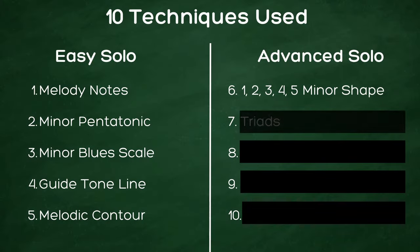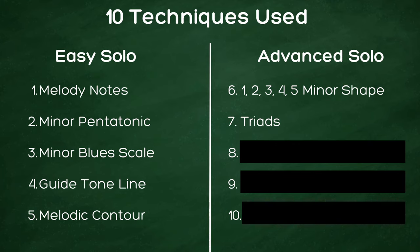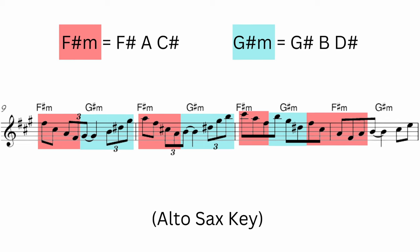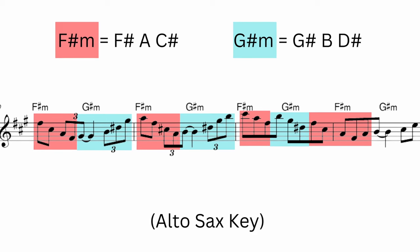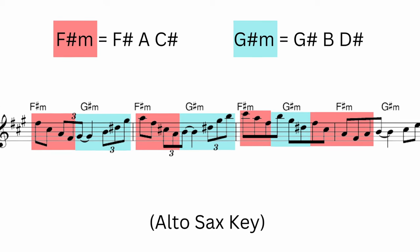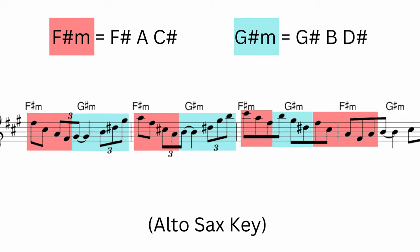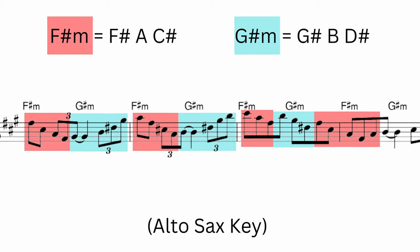After using that blues scale, the next technique we're going to use is a new one — using the chord triads. Triads are basically your chord tones: the first, third, and fifth. Because we're bouncing back and forth between these two minor chords, I'm just taking those two minor triads to improvise with. For alto sax we've got the F-sharp minor and G-sharp minor triads, and for tenor sax we've got the B minor and C-sharp minor triads.